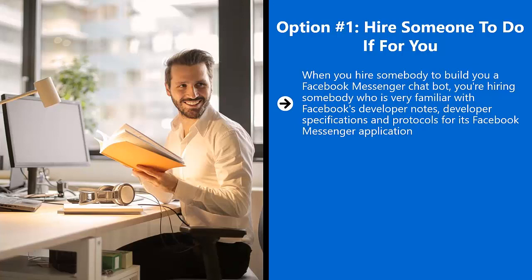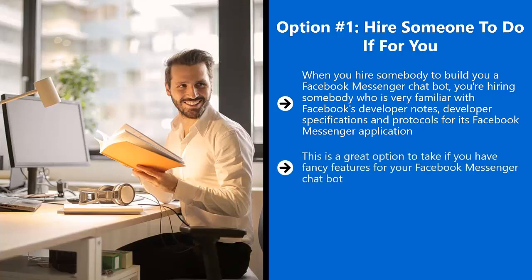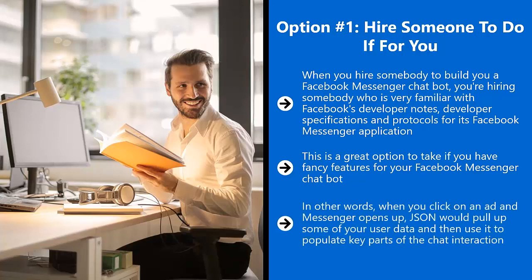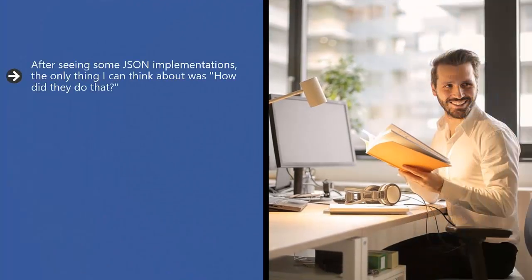That person definitely has the experience to do it quickly and efficiently. This is a great option if you have fancy features in mind — for example, if you are looking to automate Messenger interaction after somebody clicks on an ad, you probably would need JSON integration. When you click on an ad and Messenger opens up, JSON would pull up some of your user data and use it to populate key parts of the chat interaction. It's as if the Facebook Messenger chat bot got into your prospect's head — it's really amazing stuff.